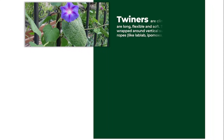The first type of climber is the twiner. Twiners have rope-like structures and they use these rope-like structures to fold themselves around an object while climbing it. A very good example of plants belonging to this category is the morning glory.